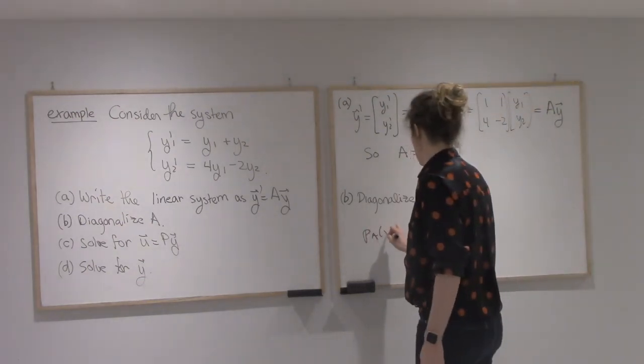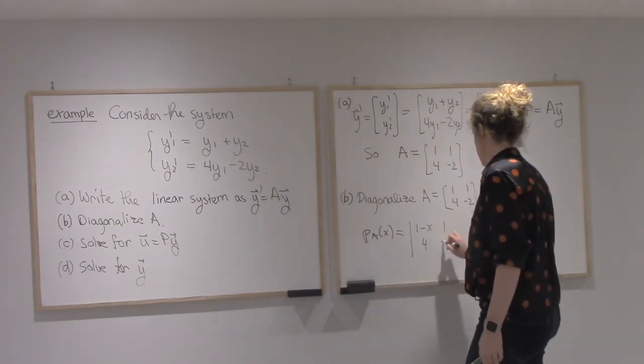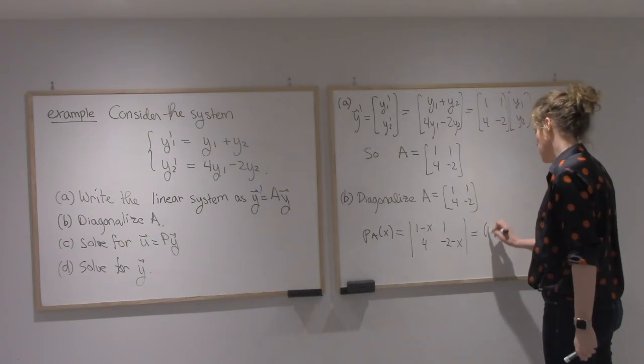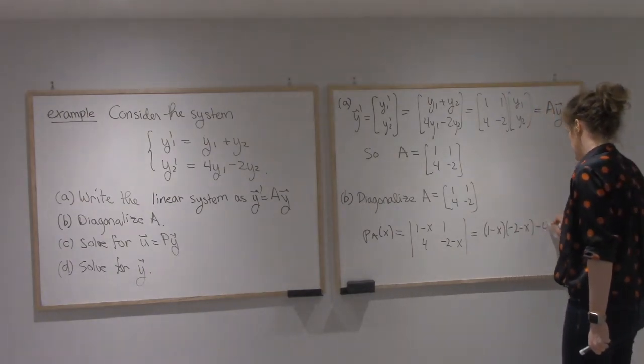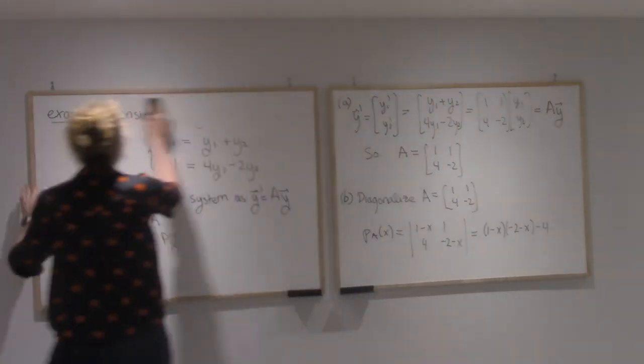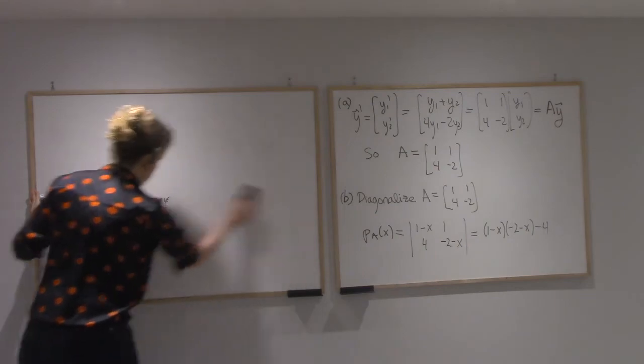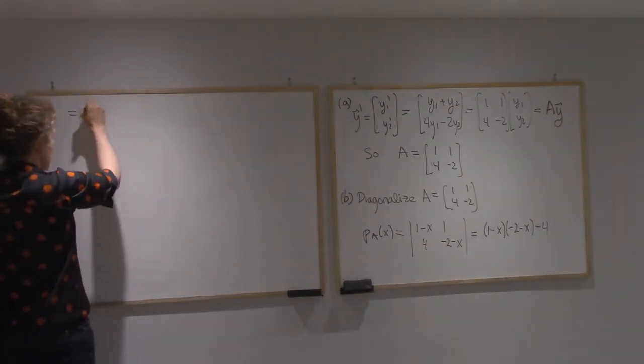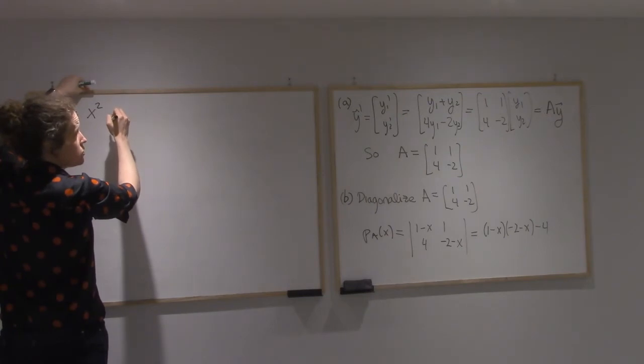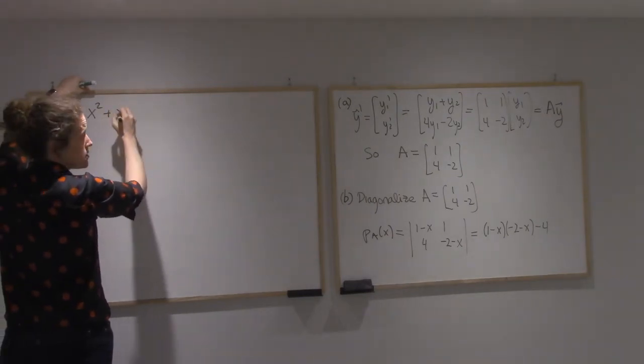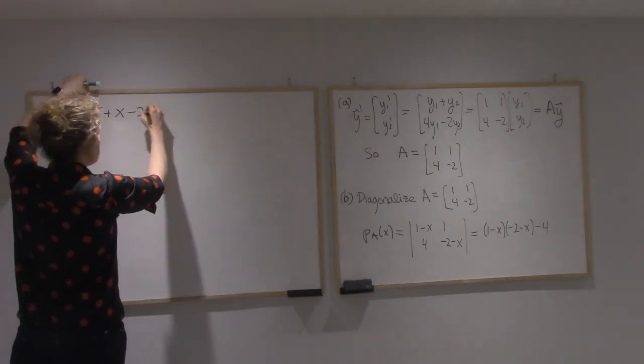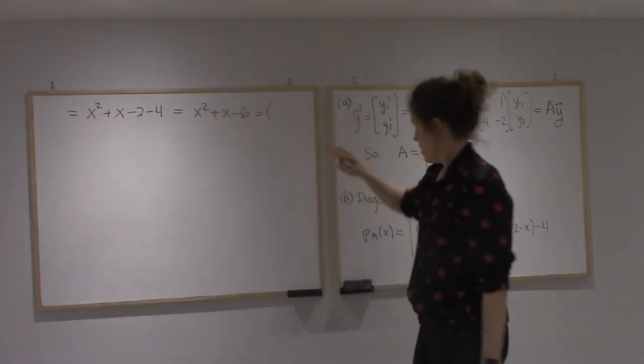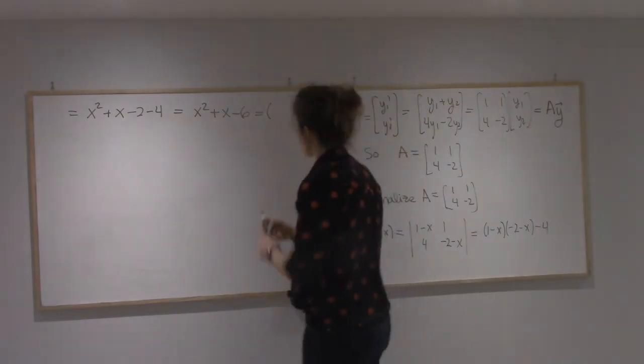So the characteristic polynomial of A is the determinant of this matrix. I'm going to get 1 minus x times minus 2 minus x minus 4. So I get x squared plus x minus 6.